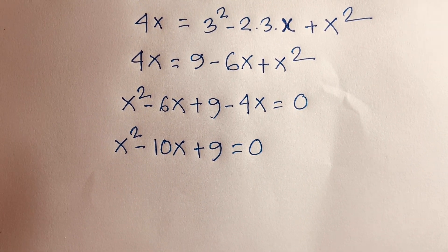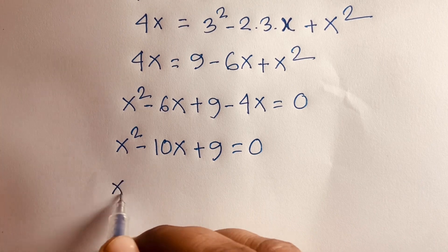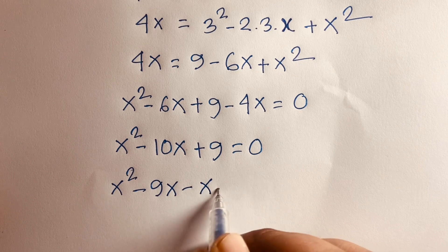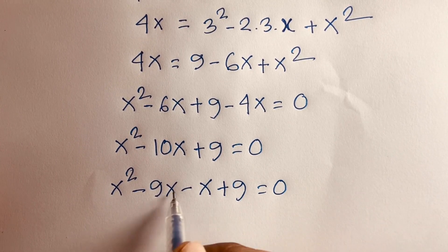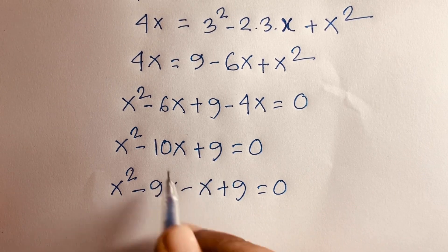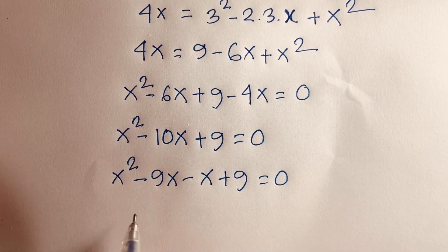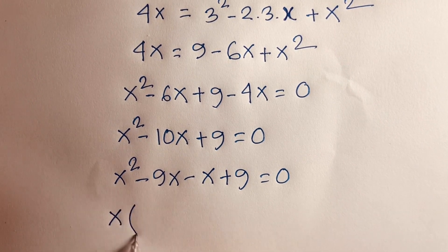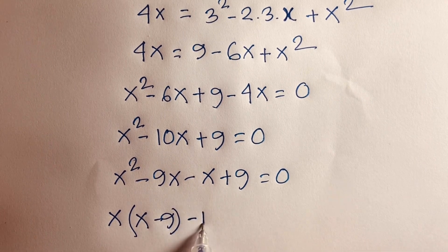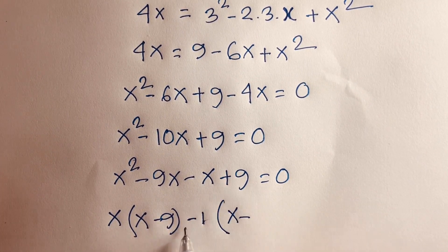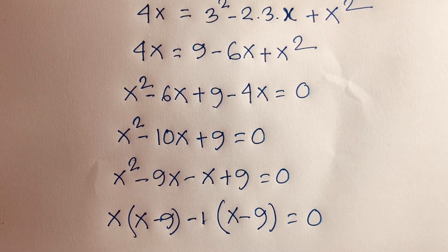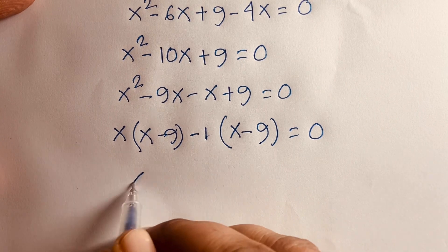Now I'll factor using the middle term method: x² - 9x - x + 9 = 0. Note that 9 × 1 = 9 and 9 + 1 = 10, so this factoring works.